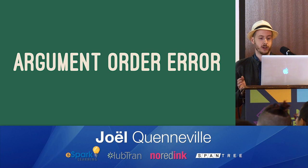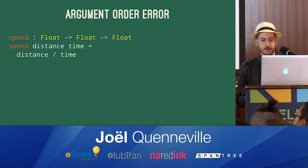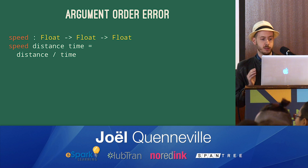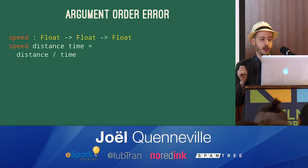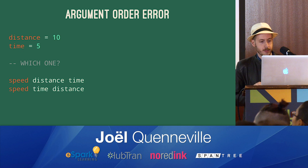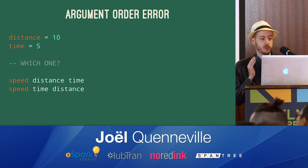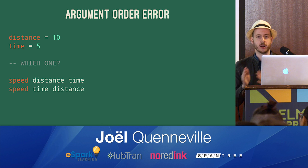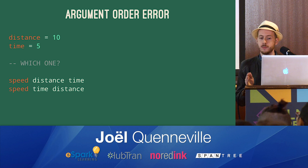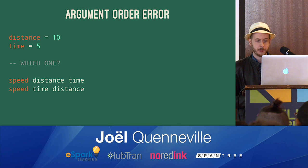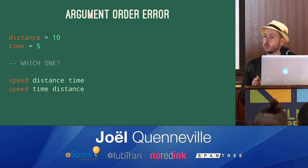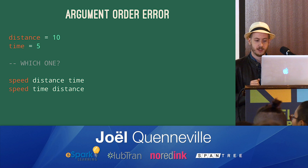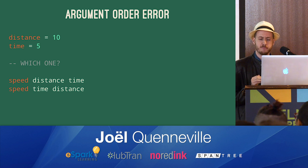Starting with argument order errors, which are probably the simplest. If we start with a function like this, where we're calculating the speed of a particular object, and we just need to know the distance it traveled and how much time. Now when we want to actually call it, we say okay, our distance is 10, our time is 5. But we forget what order the arguments go to the speed function. Is it distance then time? Or time and then distance? If we pick the wrong one, the program will still work, but we'll get a wrong answer. We might possibly even get one that's off by a factor of say, 4.45.